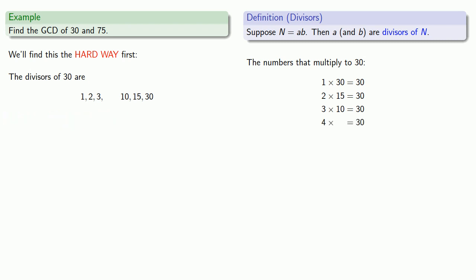4 times, nope, that doesn't work as a divisor. 5 times 6 is equal to 30, so 5 and 6 are divisors. And the next number we would try would be 6 times something, but we've already found that, which says that we've exhausted our list of possible divisors.